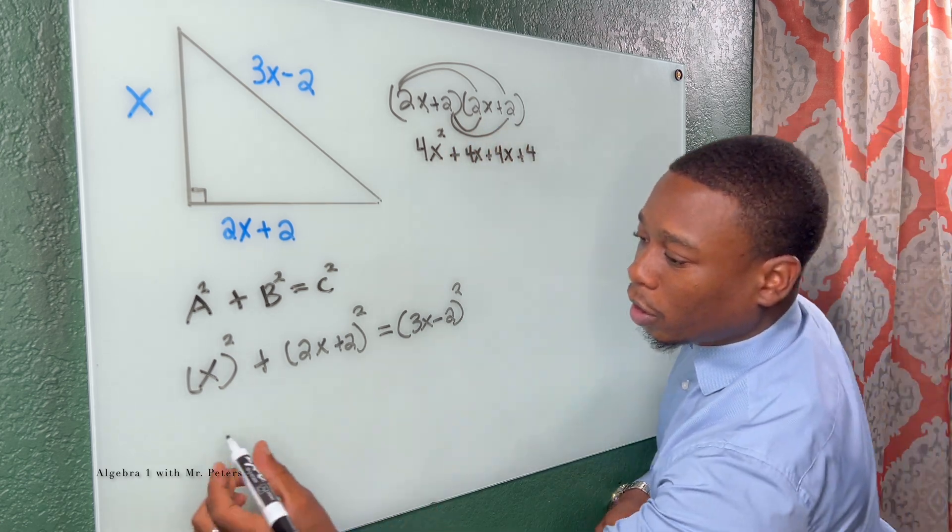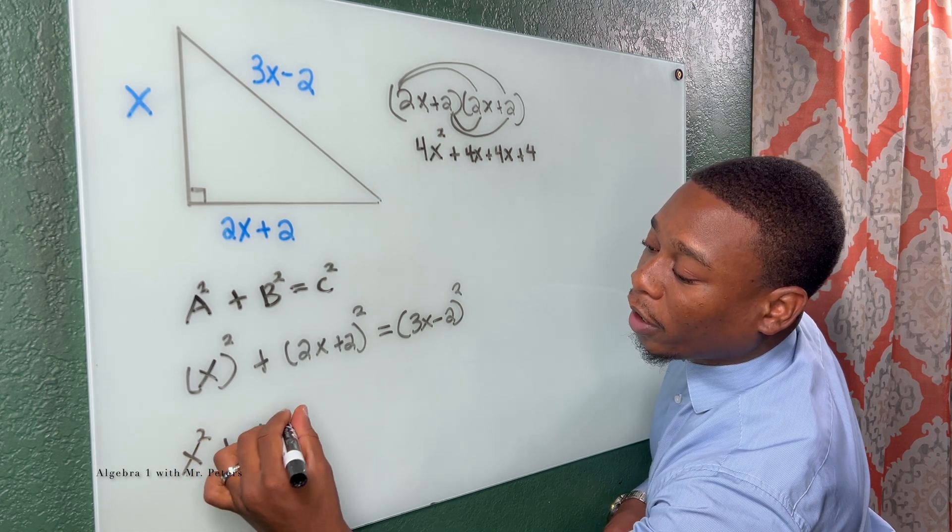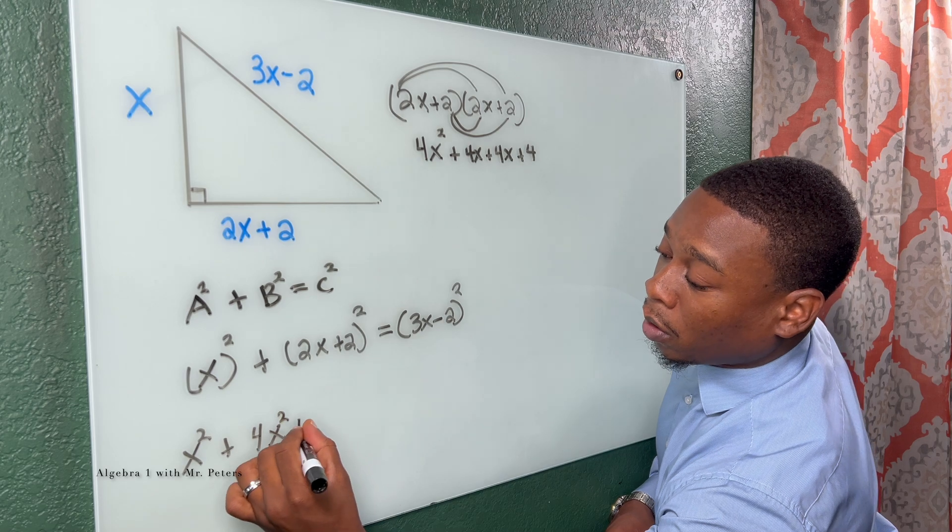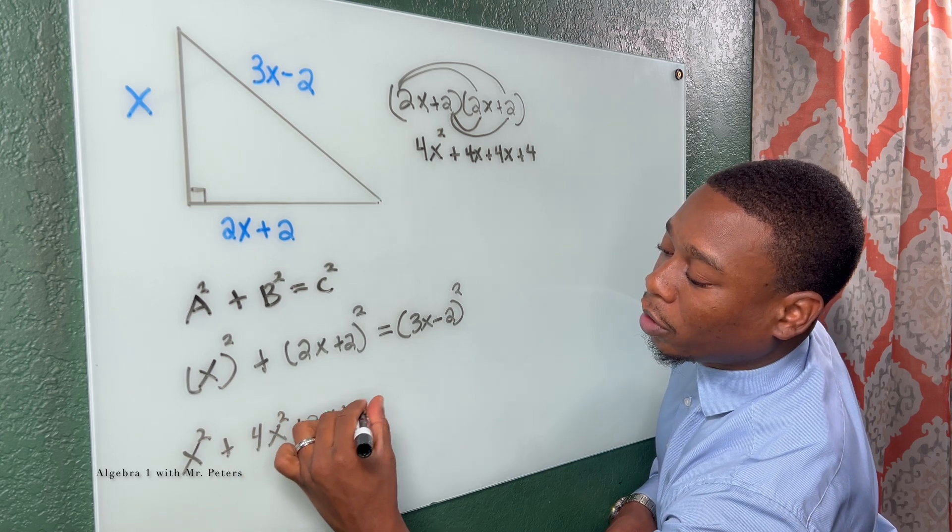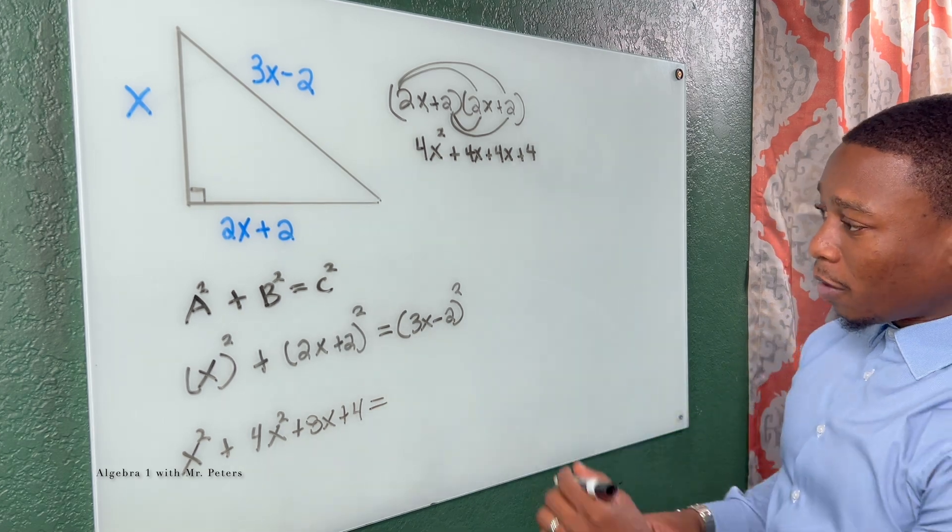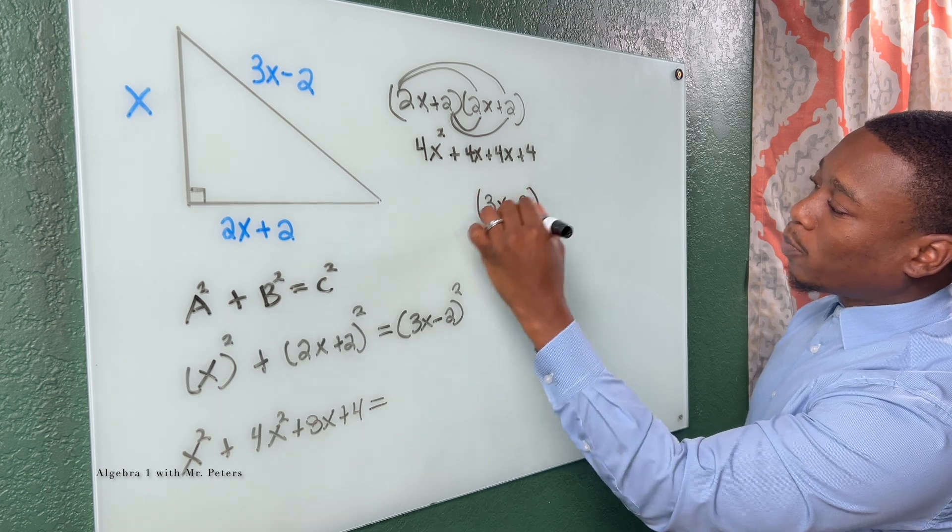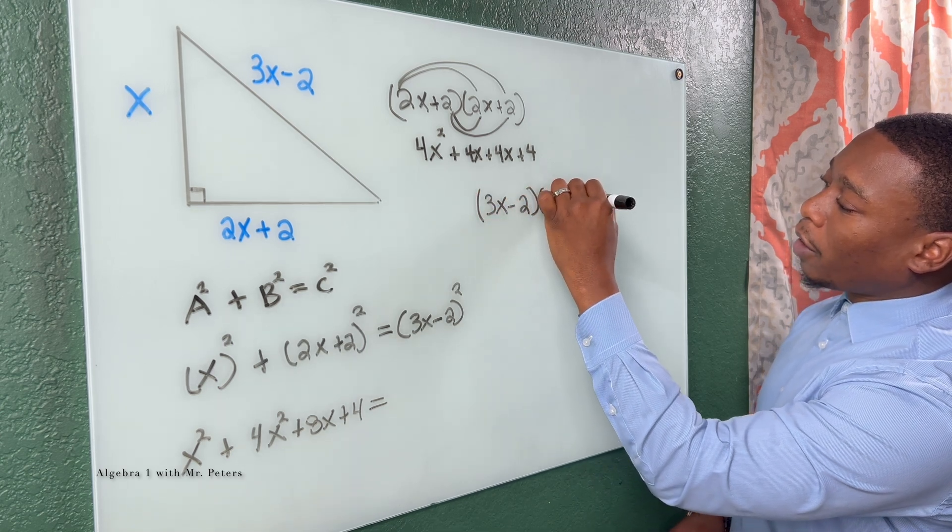So now once I clean this up, we have X squared plus 4X squared plus 8X plus 4 is equal to. And now we can go back and expand this to the second power. So we do the same process. Expand this binomial and FOIL.